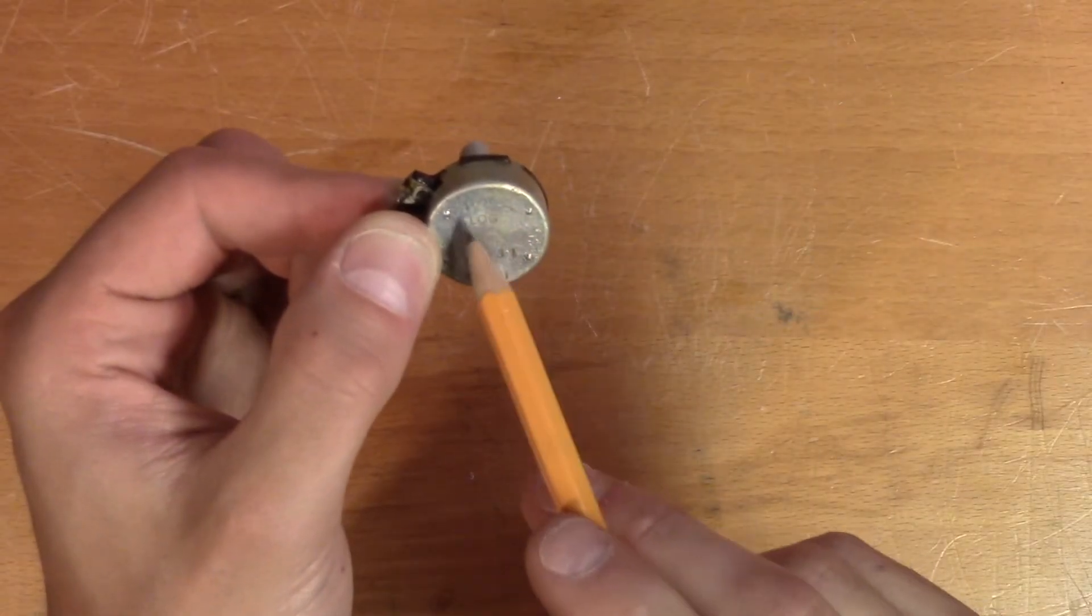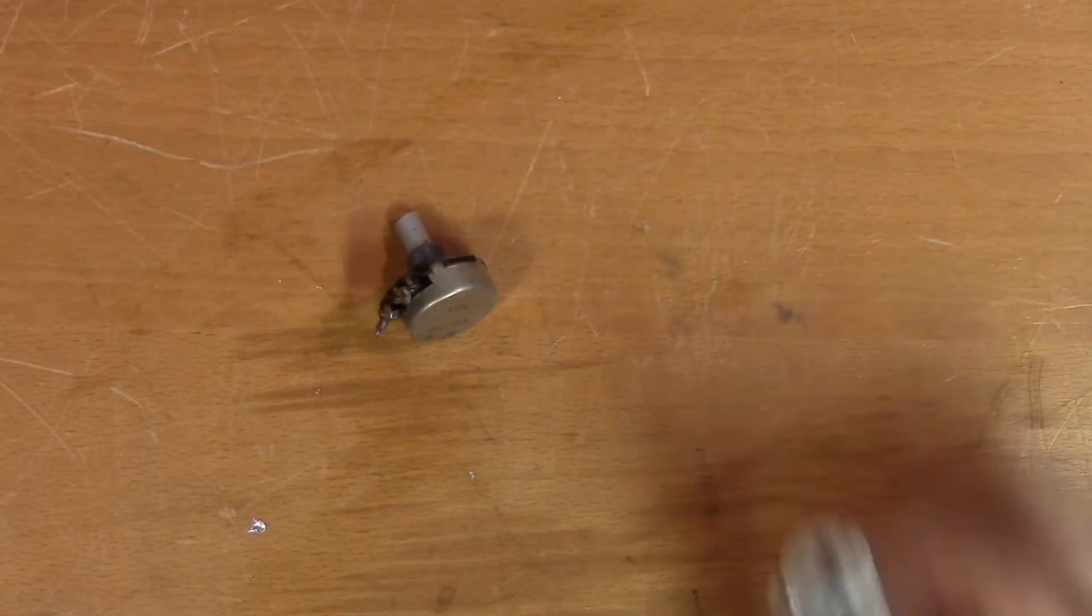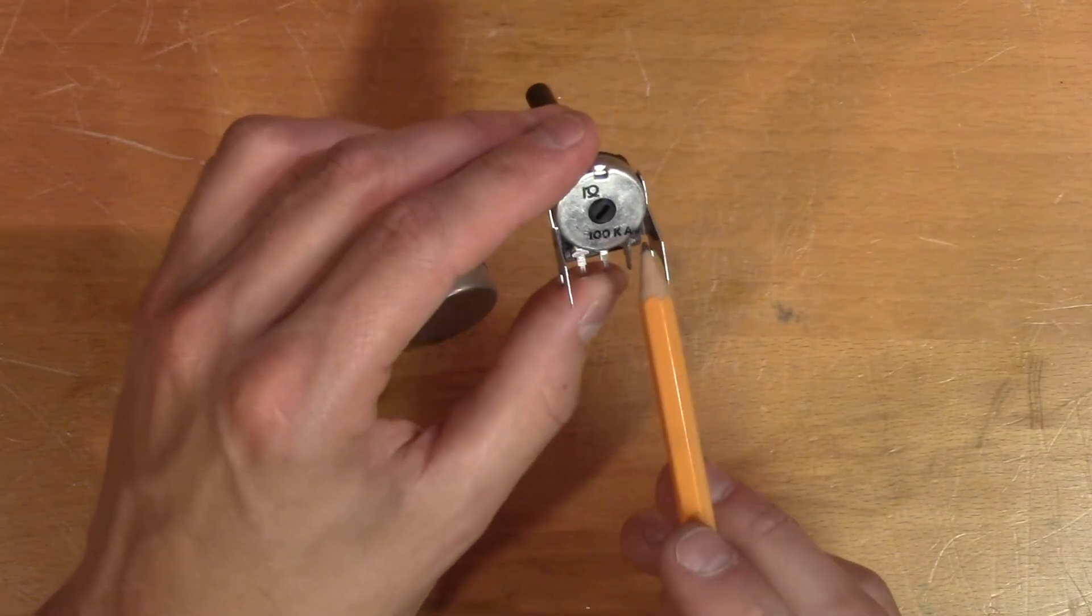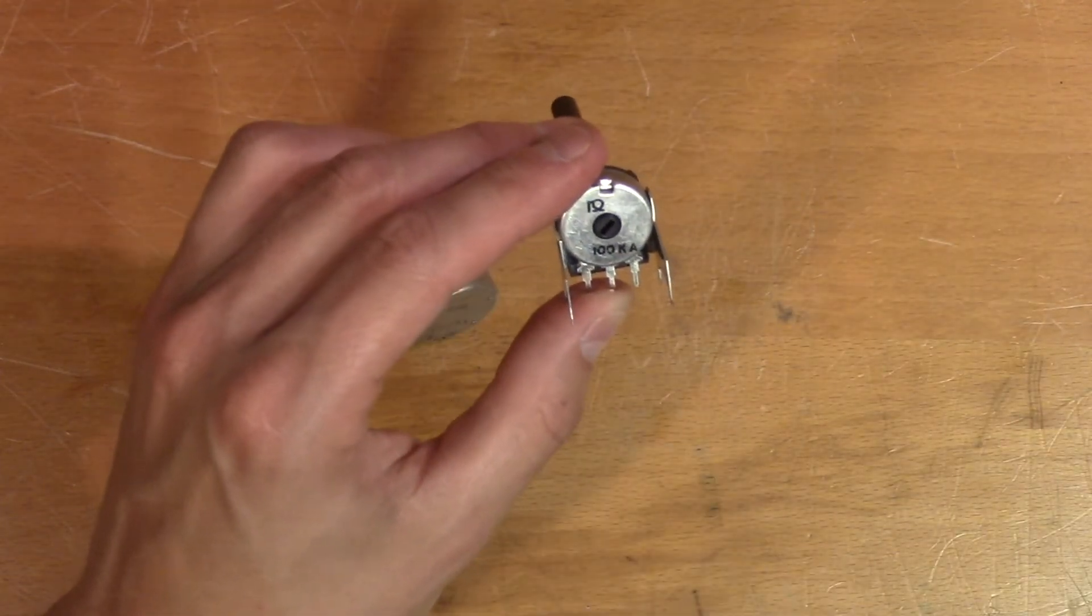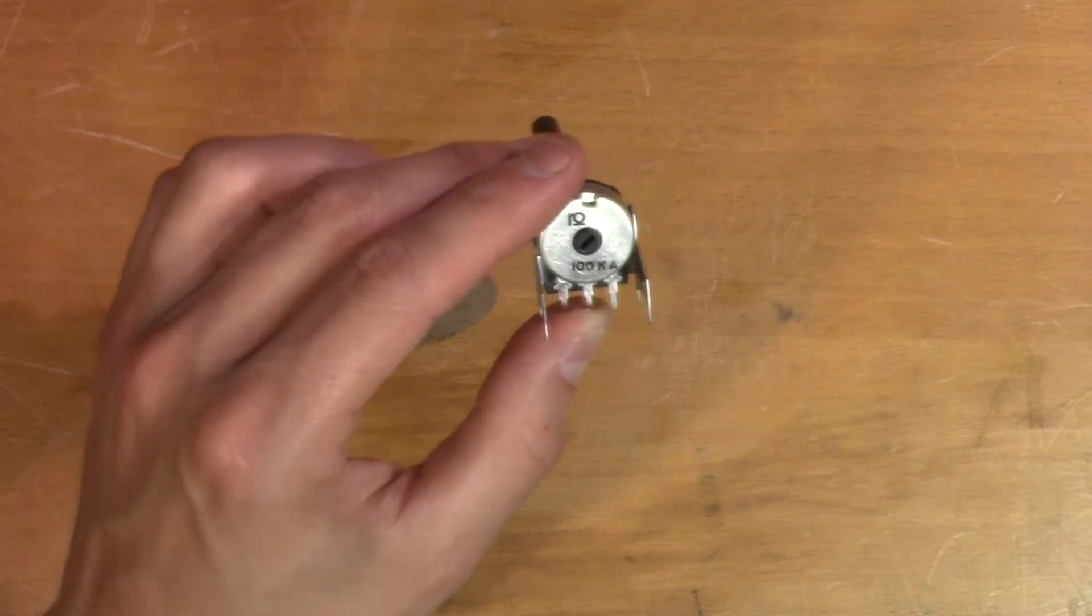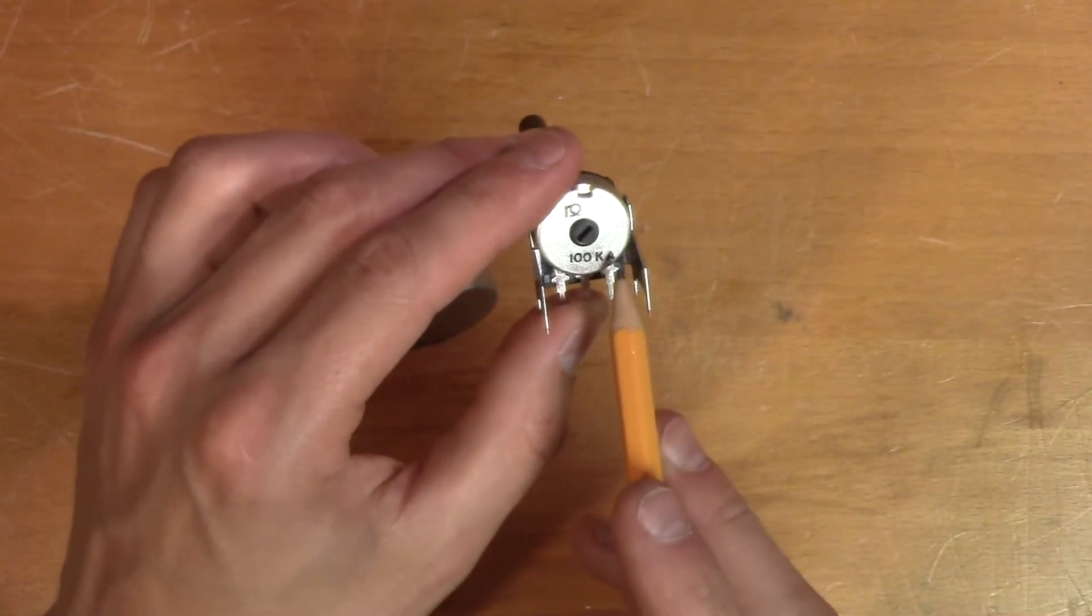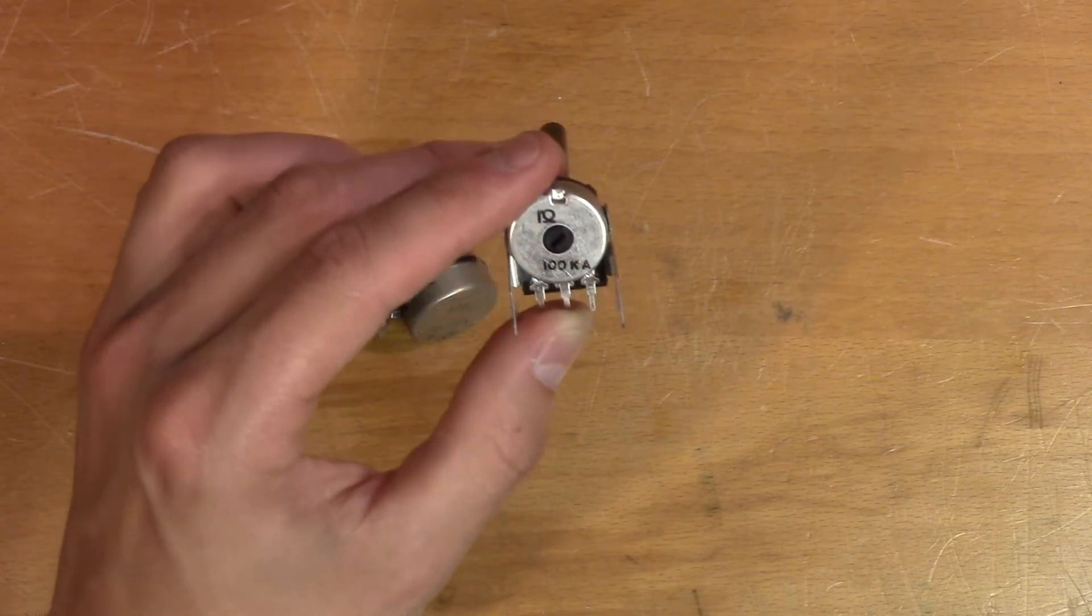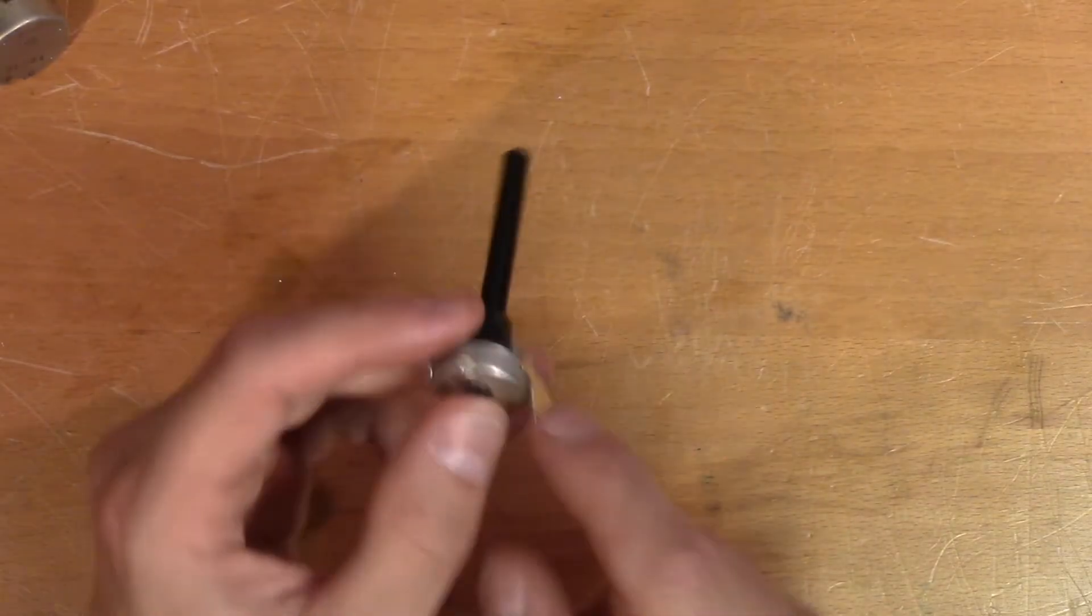So it's a 100 kilo ohm logarithmic resistor. I'm going to replace it with this 100 kilo ohm potentiometer. It has the taper code A, which usually means that it's a logarithmic potentiometer. Now there are some regional differences regarding this taper code, which is unfortunate. But I'm pretty sure this is a logarithmic potentiometer. Let's get rid of these legs.